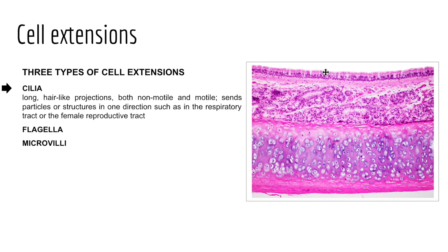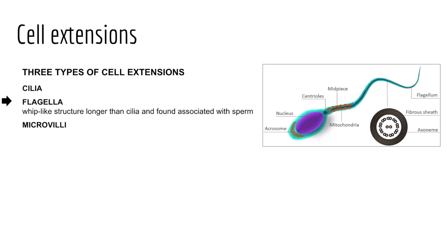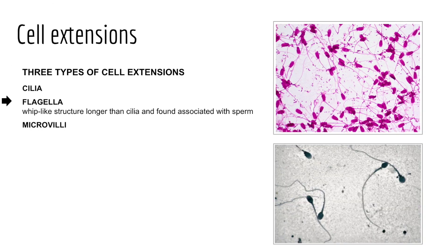Next, we have flagella. Flagella are responsible for propulsive actions — cell projections that are longer than cilia and used to propel or move a cell. During our last term of A&P, we're going to study the reproductive system where we'll see the flagellum involved with mature sperm movement, helping sperm move through the female reproductive tract to meet with an egg in the fallopian tubes. Here are some slides from the PAL site where we see mature sperm stained in various views.